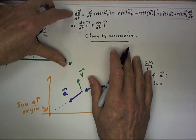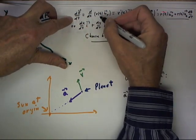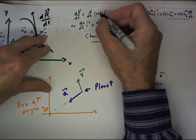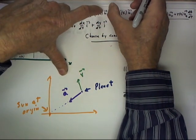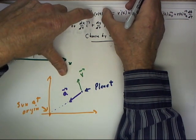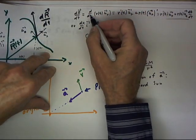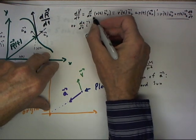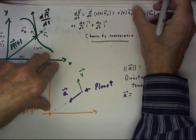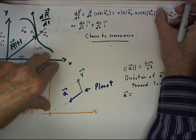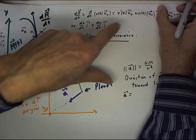Now, in the polar form, dr dt is the derivative with respect to t of r of t u sub r. And by the product rule, that's going to be the derivative of this times this plus the derivative of this times this. So, that derivative of our vector function is going to be expressed r prime u r plus r of t times u r prime.